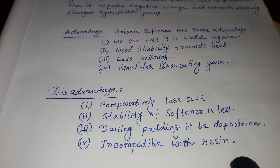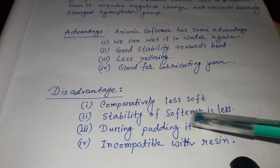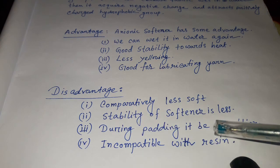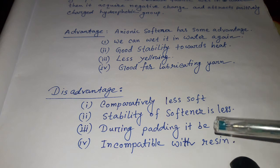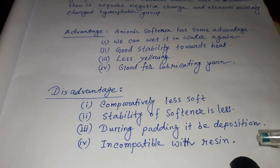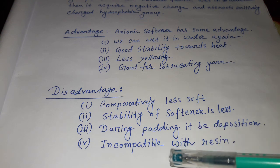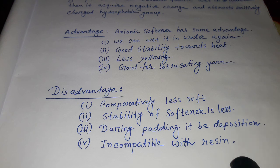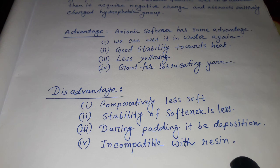Anionic softener also has some disadvantages. It is comparatively less soft than other softeners. The stability of this softener is less — stability is not good during padding as there can be deposition. It is also incompatible with resin, meaning it cannot be used with resin, and if used, its stability for aging will not be good.